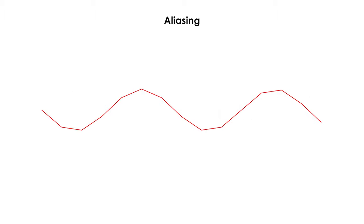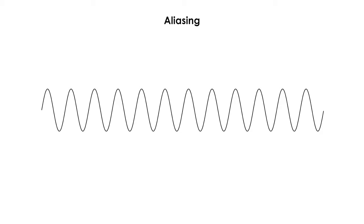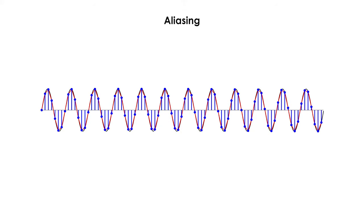That is, the digital wave has a different frequency than the analog wave we tried to measure. When this happens, the original wave cannot be recovered, so we would have to re-record it with a higher sampling rate.